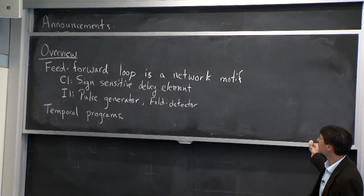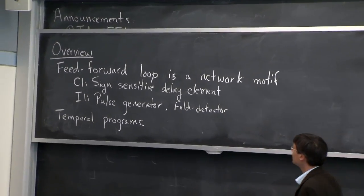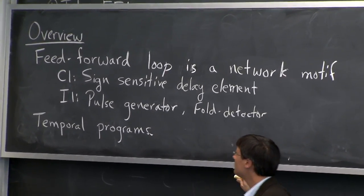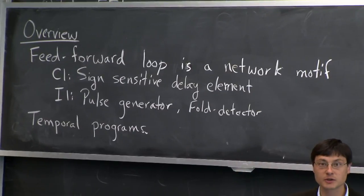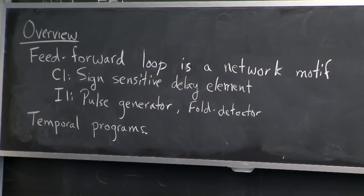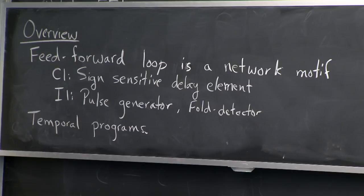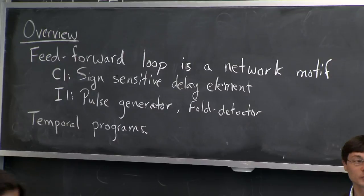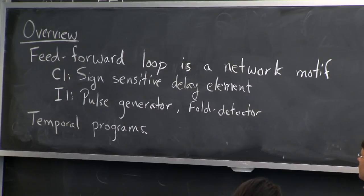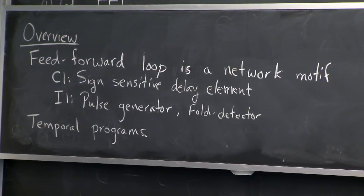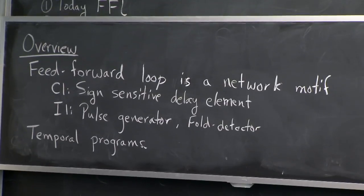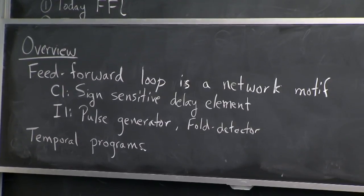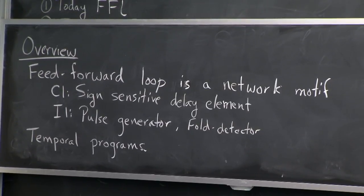Today we'll be discussing various aspects of feed forward loops. First, we will go over the idea of a network motif in more detail. We talked about it a little bit in the context of auto-regulation — there was a simple argument that auto-regulation is a network motif. In order to understand how to detect network motifs in general, we have to look at subgraphs and the frequency that they appear.